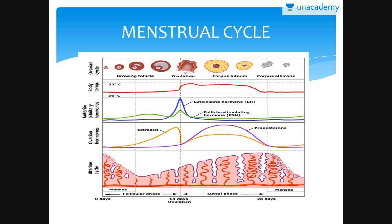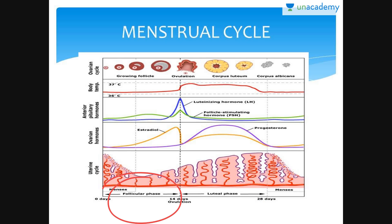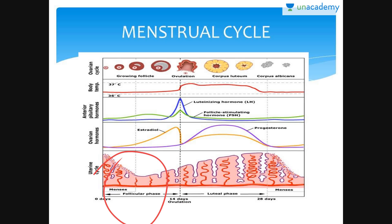The menstrual cycle has the following phases: a luteal phase of usually 3 to 4 days, a follicular phase from days 5 to 13, and an ovulatory phase on the 14th day.